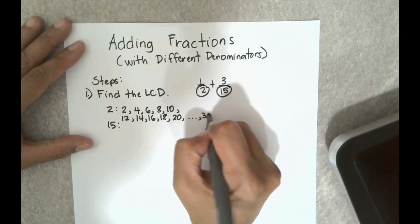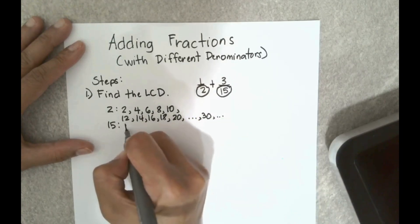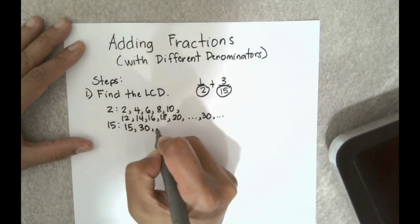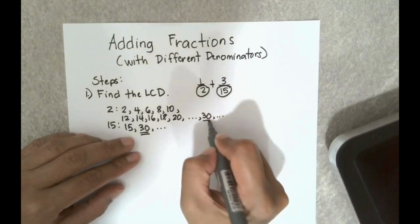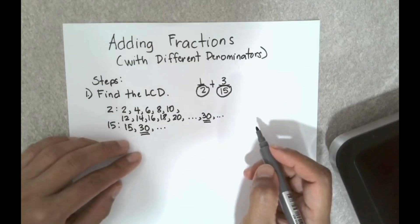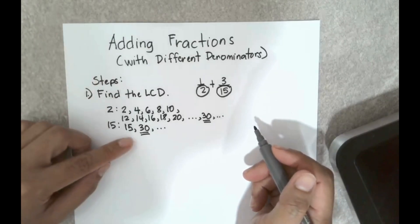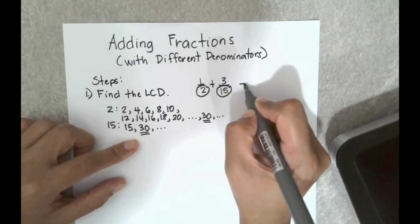For 15 I can start with 15, then 30, and so on. I don't need to continue because I can see that 30 is already there. The LCD is the least common denominator and that is simply the least common multiple of the two denominators.